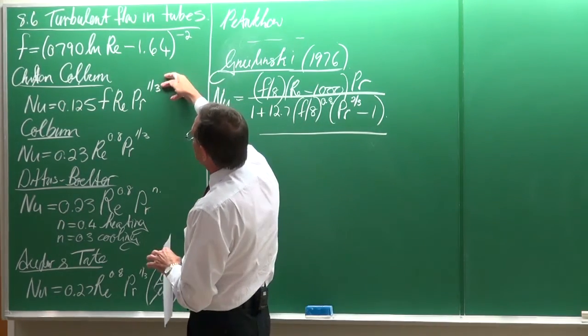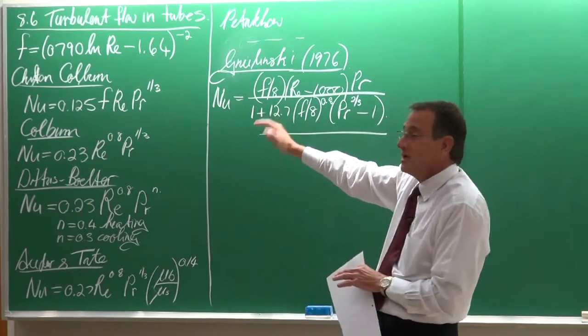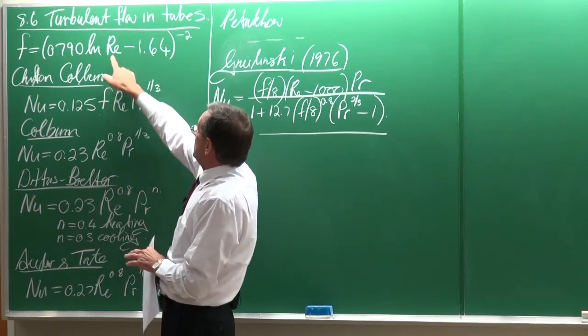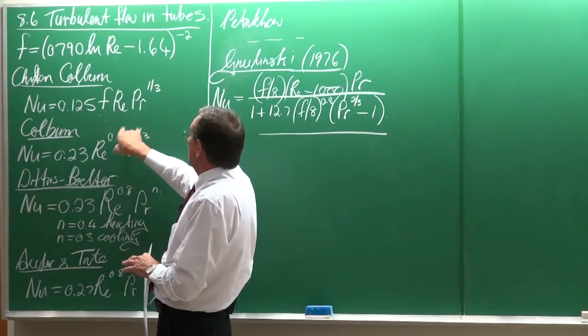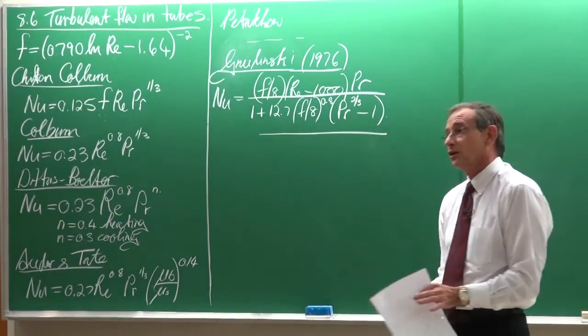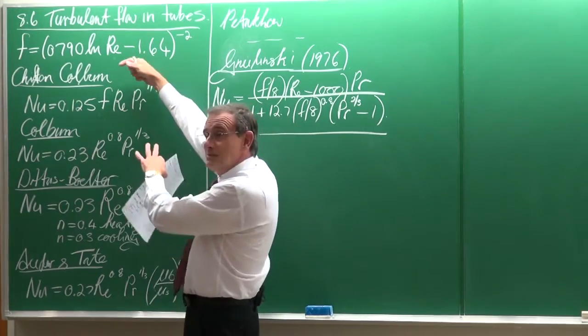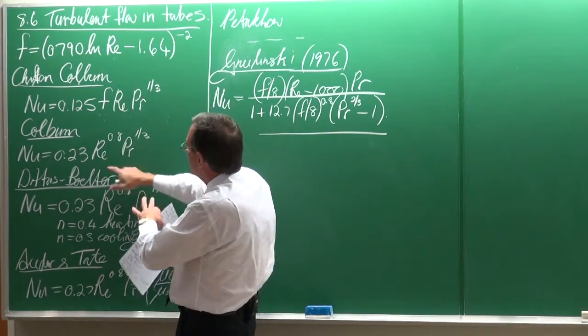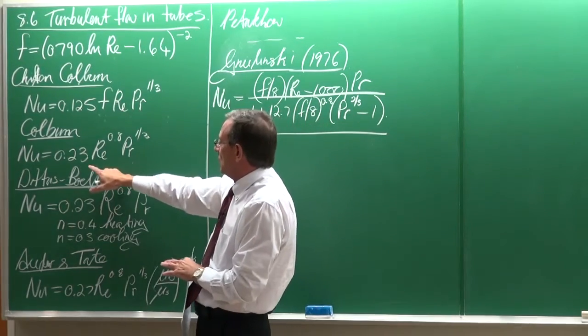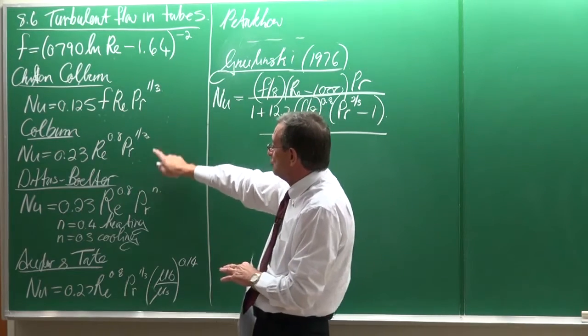you'll see that this friction factor equation is only valid for a certain Reynolds number range. So, now the first equation, almost 80 years ago, was developed by Chilton and Colbin, and this is the Chilton-Colbin equation. So, you can see, getting the Nusselt number, you must first get the friction factor, and you need the Reynolds and the Prandtl number, and then you can get the heat transfer coefficient from the Nusselt number. And then, with the same data set, people like Colbin developed an easier equation, this one, 0.23 Reynolds to the 0.8, and Prandtl to the third.